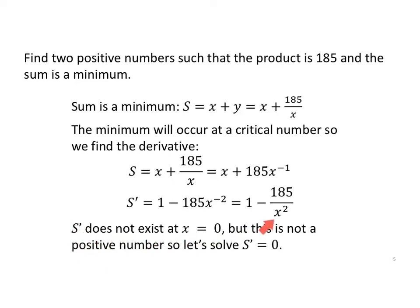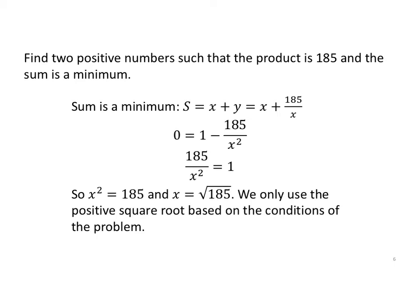Now, S prime does not exist at x equals 0, but we're looking for two positive numbers such that the product is 185. I know that 0 is not a positive number. So let's solve S prime equals 0. S prime equals 1 minus 185 over x squared. If 185 over x squared equals 1, then x squared equals 185 and x will be the square root of 185.